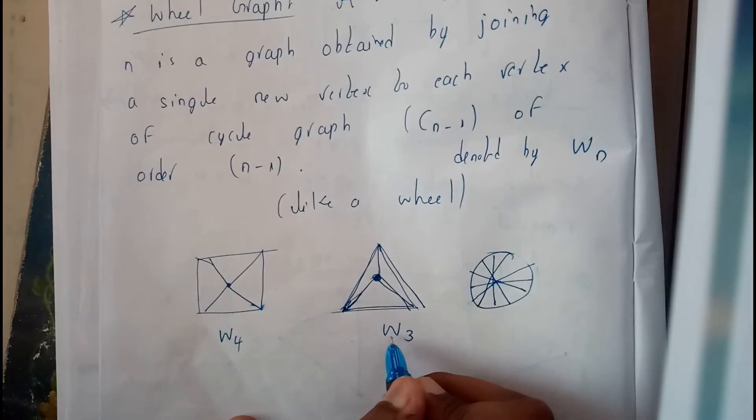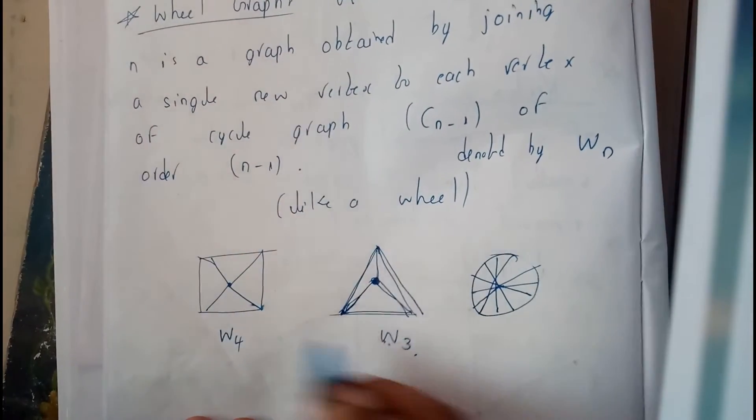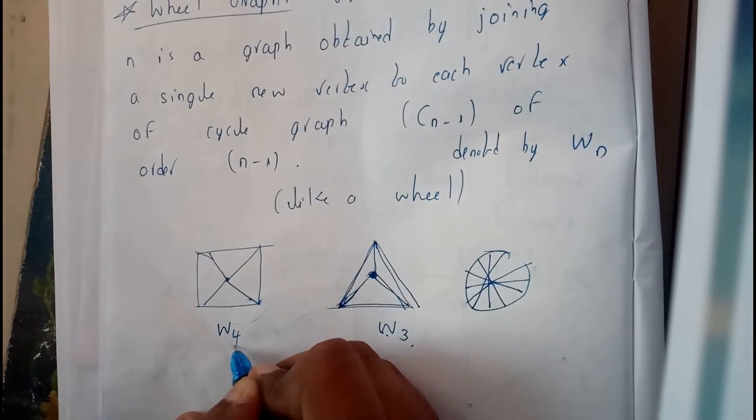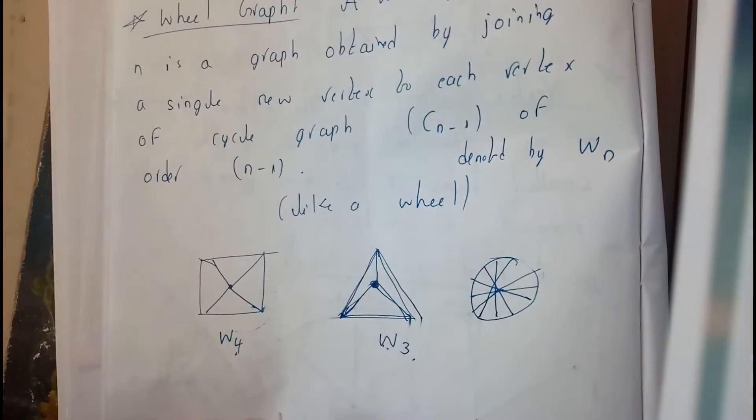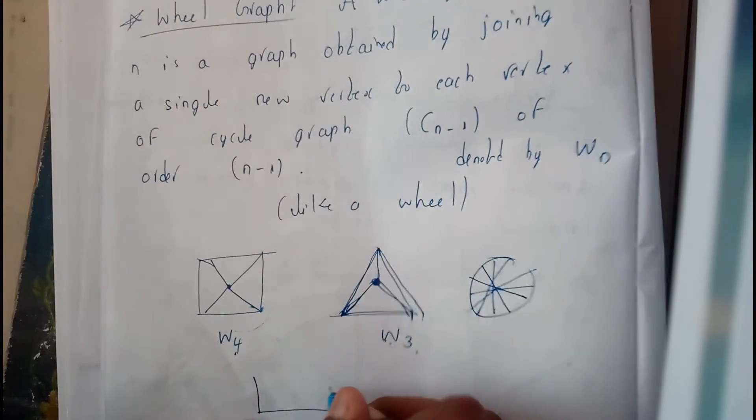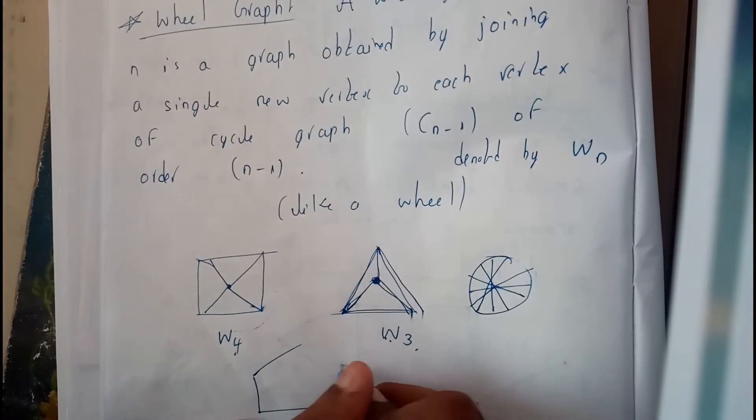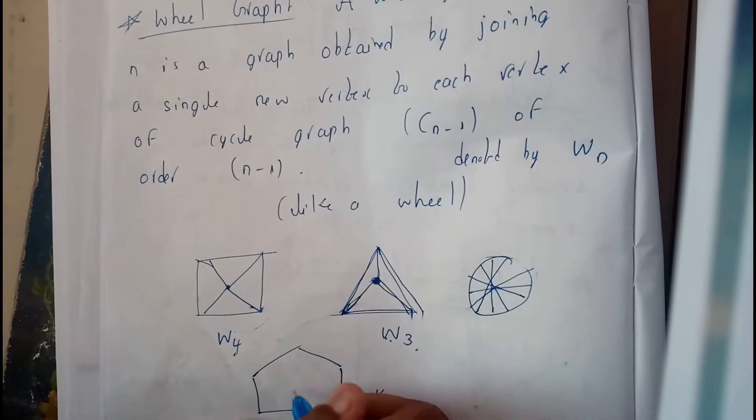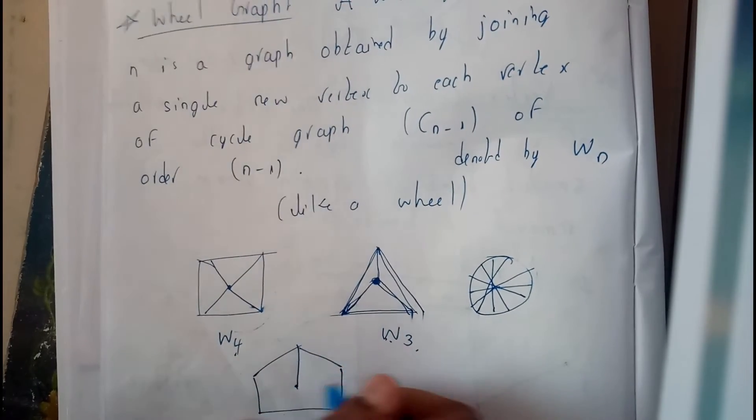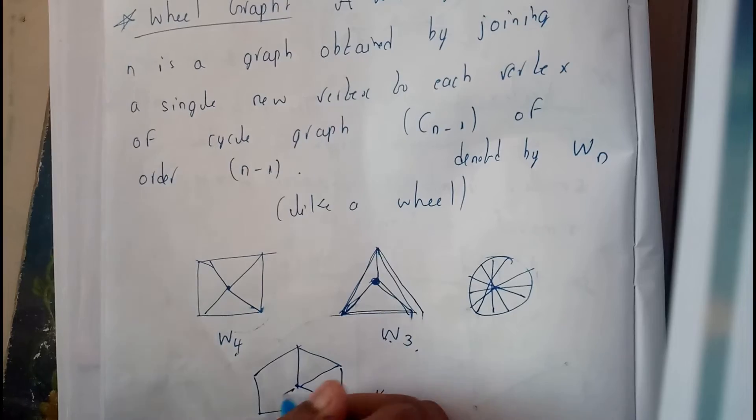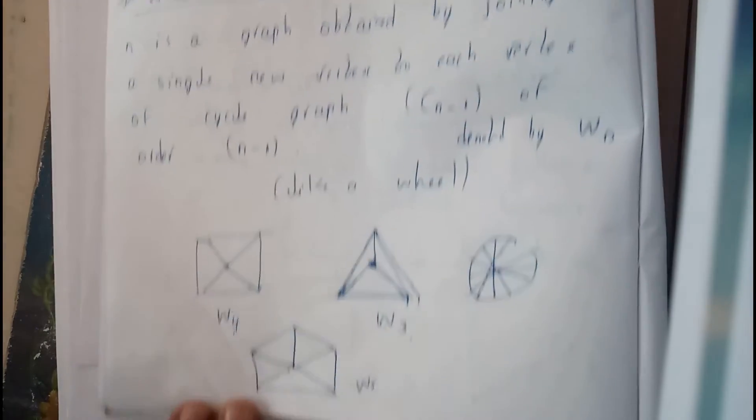This is denoted by W3. We have W4 if you have like this. This is W5 and you'll be having a center dot with all possible vertices like this, this is W5.